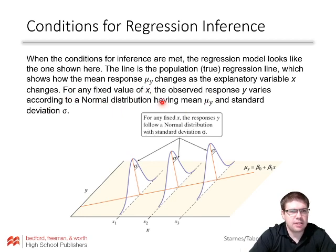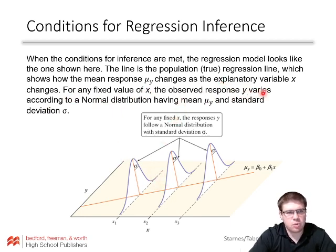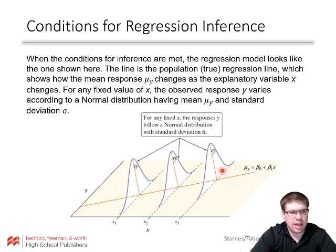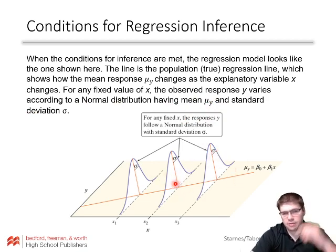For any fixed value of x, the observed response y varies according to a normal distribution, having a mean of mu sub y and a standard deviation of sigma. That standard deviation is the standard deviation about the line — about the residuals.